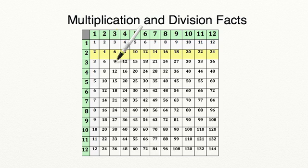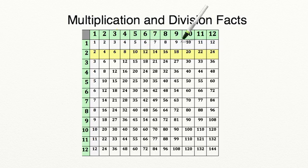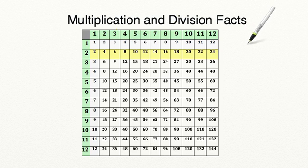So 2 times 1 equals 2. 2 times 2 equals 4. 2 times 3 equals 6. 2 times 4 equals 8. 2 times 5 equals 10, and so on. You can see how you multiply these numbers together to equal a product. Now look for a pattern in this highlighted row.